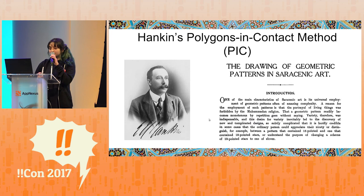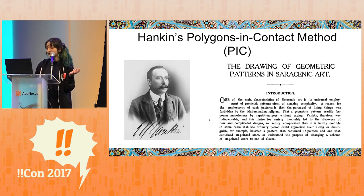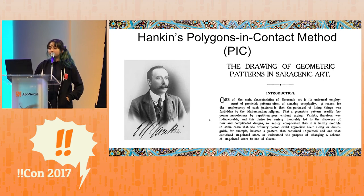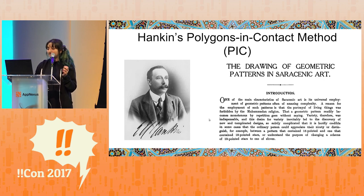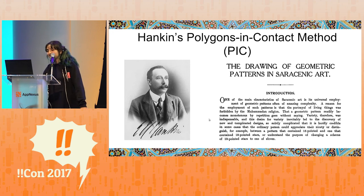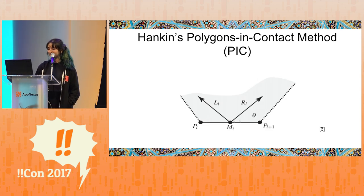So, how do we actually go from tilings to star patterns? There's a method called Hankin's polygons in contact algorithm. As far as we're aware, it was first written down by Ernest Hanbury Hankin in the 1920s — I don't want to say it was invented or discovered by him, because we don't actually know how a lot of tilings were constructed historically. Interestingly, Hankin was actually a biologist who studied these patterns in his free time, and work he did as a hobby has had a significant impact on research mathematics in this very specific field. Before we get to the algorithm, we need to familiarize ourselves with some notation.